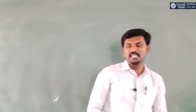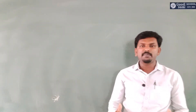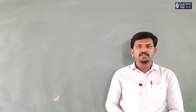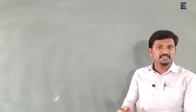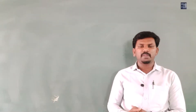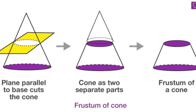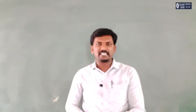Hello students. In this video we are going to see the frustum of a cone. This is the first time you are hearing the word frustum of a cone. It is a shape. If we cut a cone — we are all familiar with the cone — if we cut the cone into two parts horizontally, you will get a smaller cone and one more part will be like a bucket-shaped cone. That shape is called frustum of a cone.